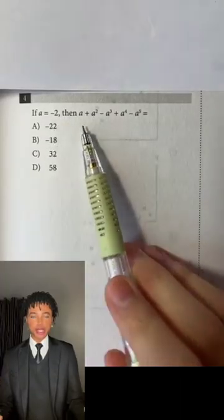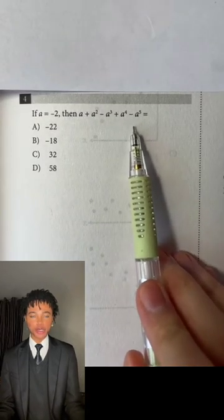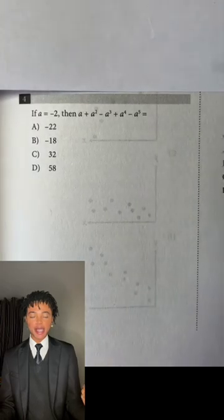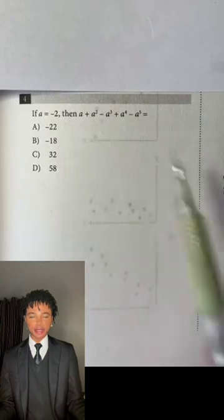If a equals negative 2, then a plus a squared minus a cubed plus a to the fourth power minus a to the fifth power equals what? Okay, so since we're given the value of a, which is negative 2, we can just plug in negative 2 for a in this expression.